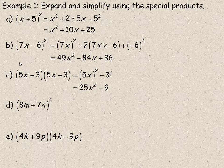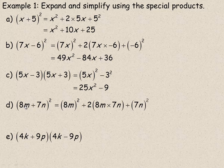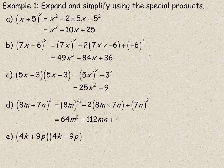Example d is like a and b — we're squaring a binomial. So 8m squared on the start, 7n squared on the end. In the middle, it's 2 times the product of 8m and 7n. So 8m squared gives 64m squared. 8m times 7n is 56mn, doubled is 112mn. And 7n squared is 49n squared.